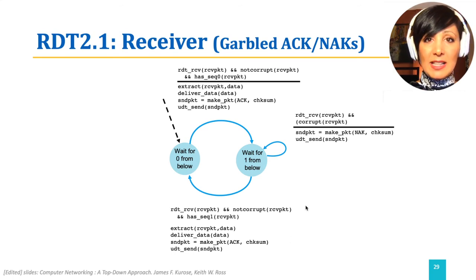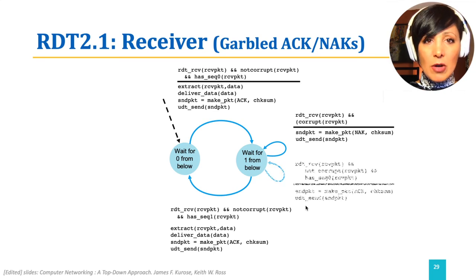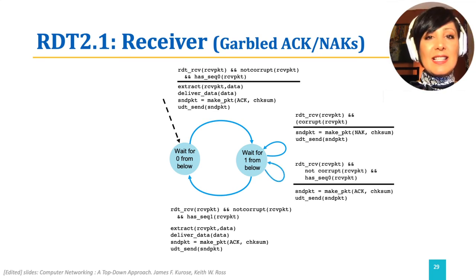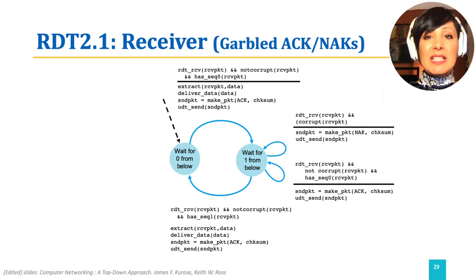If a packet arrives but it has sequence number zero, it will be discarded as it is a duplicate packet, but an acknowledgement for packet zero will be sent to the sender.